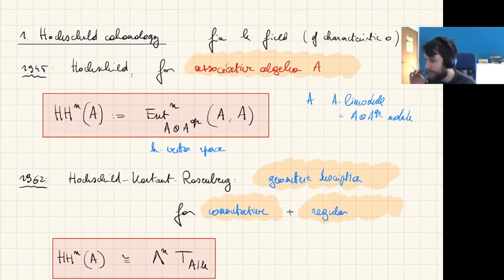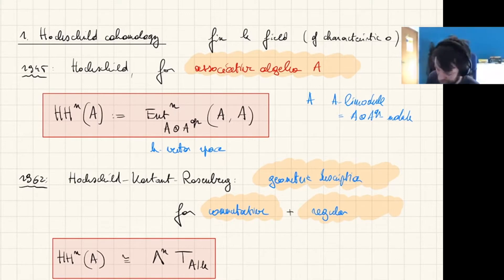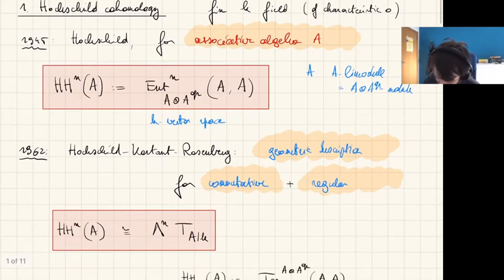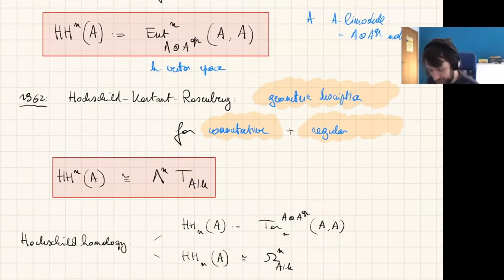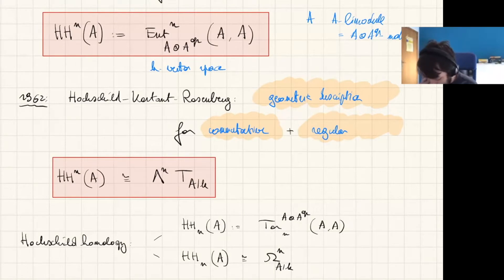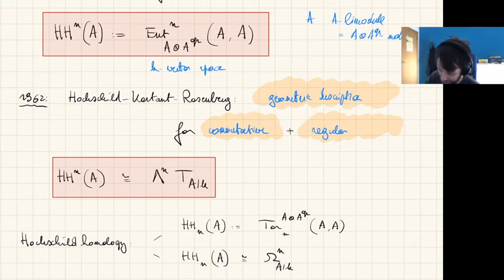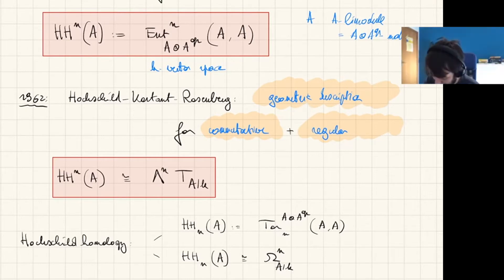The majority of the talk is about Hochschild cohomology, but I also want to make a parallel to Hochschild homology. The definition now involves the Tor functor: instead of derived functors of Hom, we take derived functors of the tensor product inside the category of bimodules. The geometric identification now uses the cotangent bundle instead of the tangent bundle.